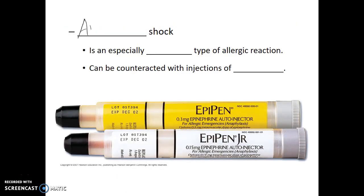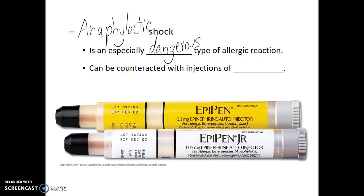Anaphylactic shock is one of the most severe forms of allergic reactions and it can be especially dangerous. If swelling happens within the throat and closes off the trachea, the individual could potentially suffocate. One of the treatments for anaphylactic shock is an injection of epinephrine or adrenaline, known as an EpiPen, which can be used if an individual is having a severe allergic reaction.